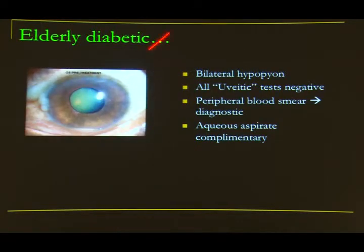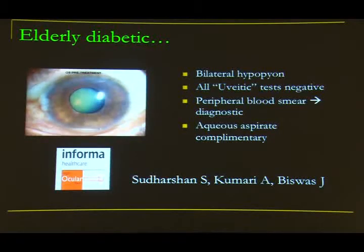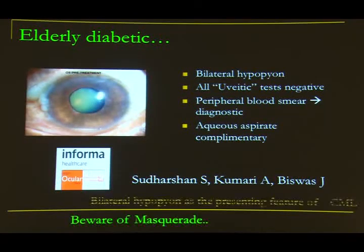Always remember that a bilateral hypopyon with all uveitis tests negative in an elderly diabetic patient led to a peripheral blood smear showing CML. When presentation is atypical, you need to think of other options and always beware of masquerade.